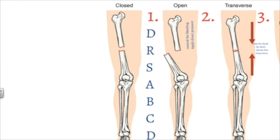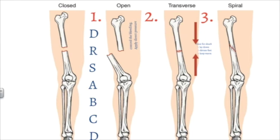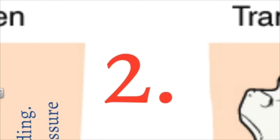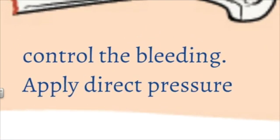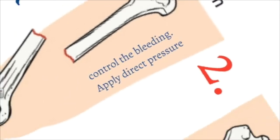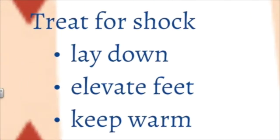With any first aid situation, start with the acronym DRSABCD: check for Danger, check for Response, Send for help, check Airways, check Breathing, perform CPR, and use a Defibrillator if available. If the bone has pierced the skin, you'll need to control the bleeding by applying direct pressure. There may also be a need to treat for shock — this involves laying the patient down, elevating their feet, and keeping them warm.